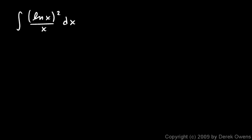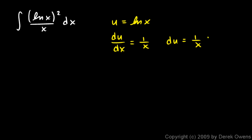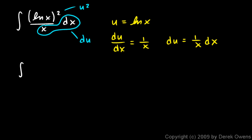Here I have the integral of the natural log of x squared over x dx. The substitution I'll use is to let u equal the natural log of x. Then du/dx is 1 over x, so du equals 1 over x dx. I see that 1 over x dx right here in the integrand, so that's du. And since u equals ln x, the ln x squared up top is u squared.